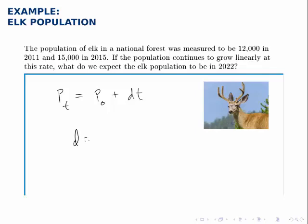D should be the amount that it grew divided by the number of years that it took to make that growth. So D is 750.